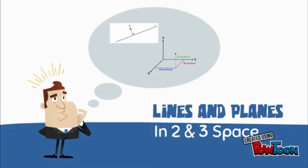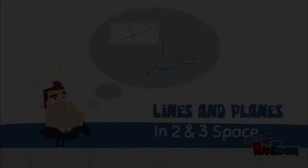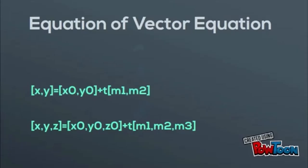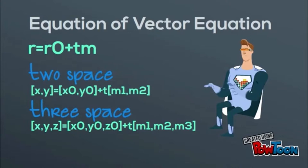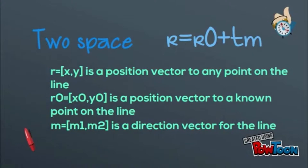We're going to cover lines in two-space and three-space. The vector equation is r equals r0 plus t·m. There are two kinds of vector equations. For two-space, r equals bracket x, y is the position vector to endpoints on the line. r0 equals bracket x0, y0 is the position vector to known points on the line. m equals m1, m2 is the direction vector of the line.